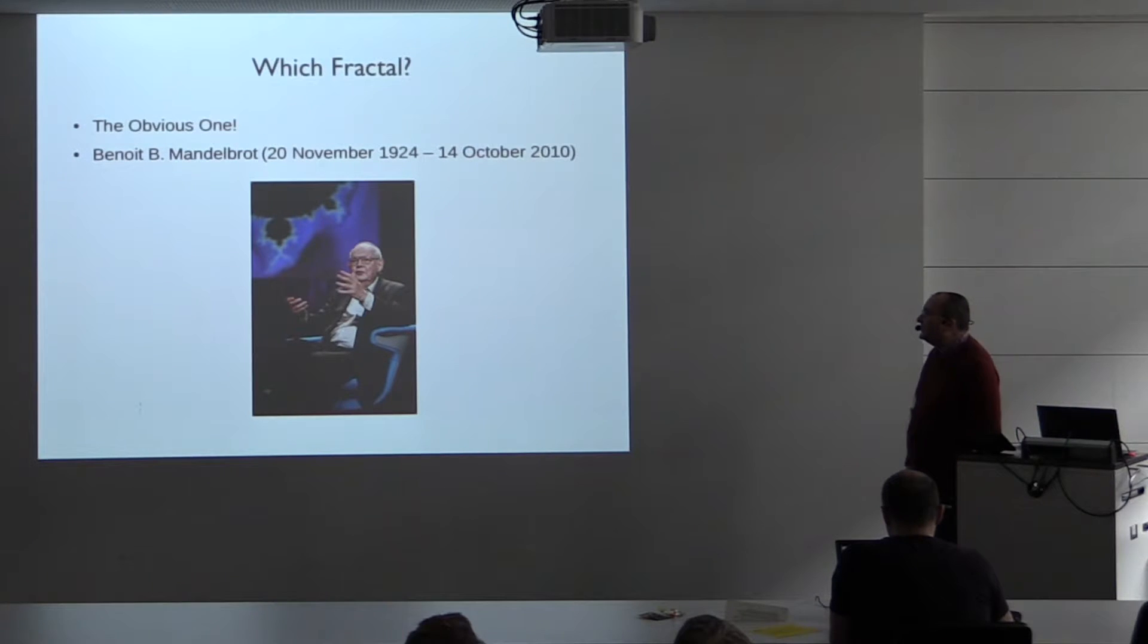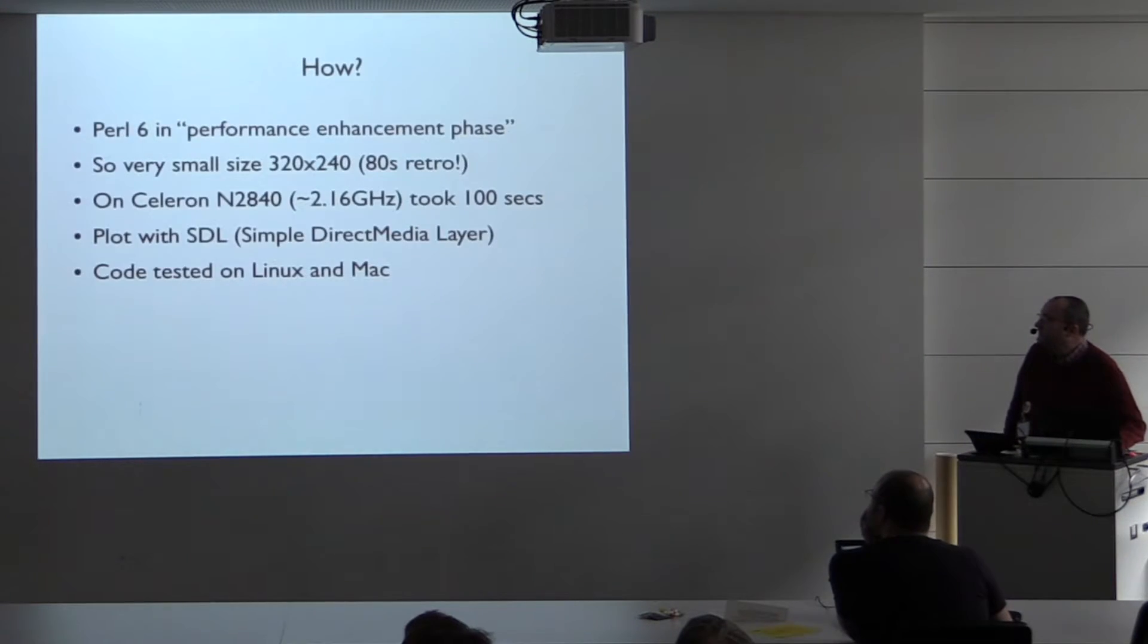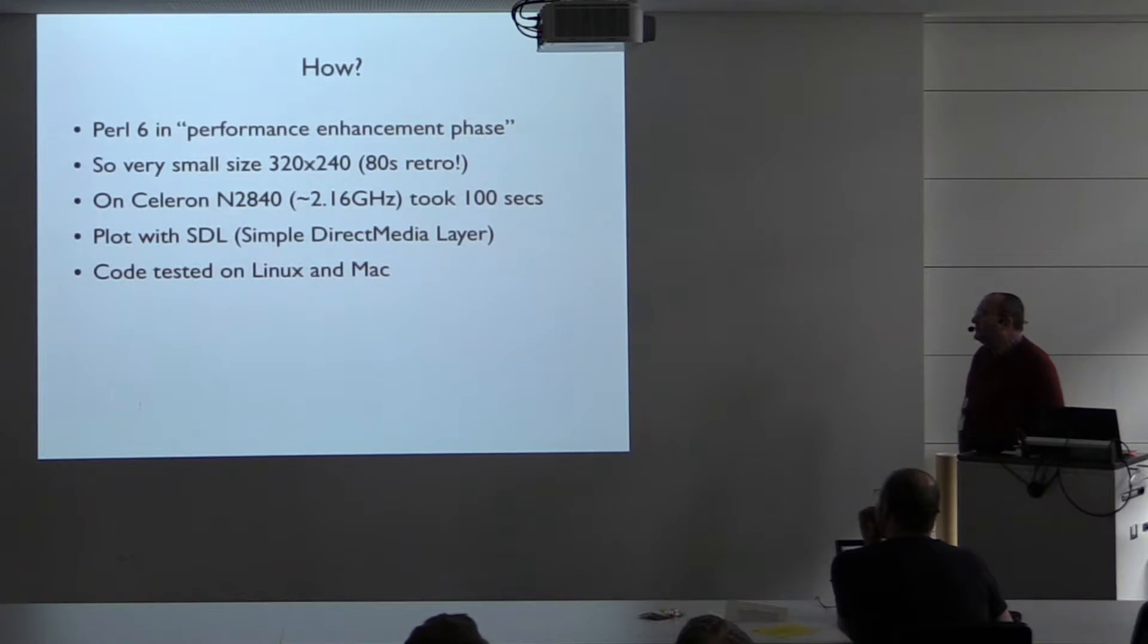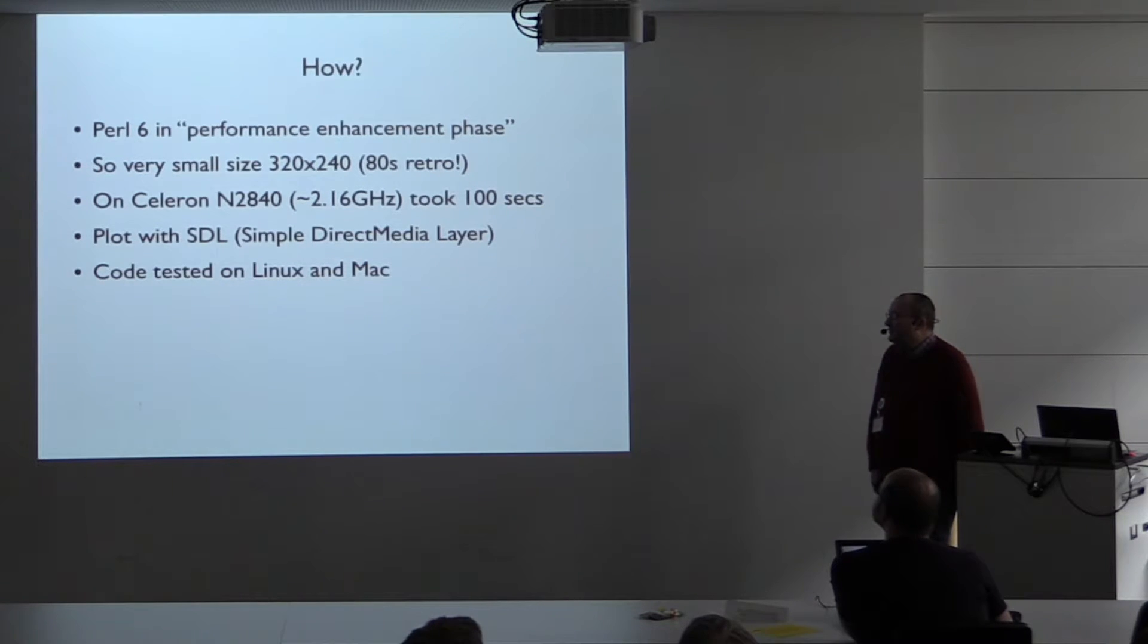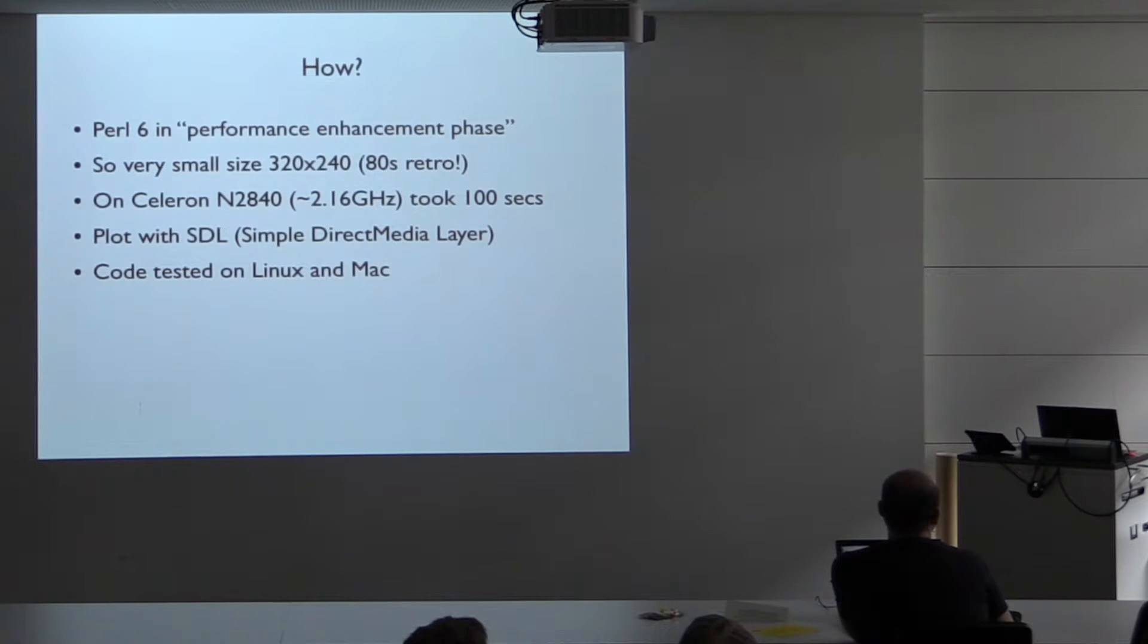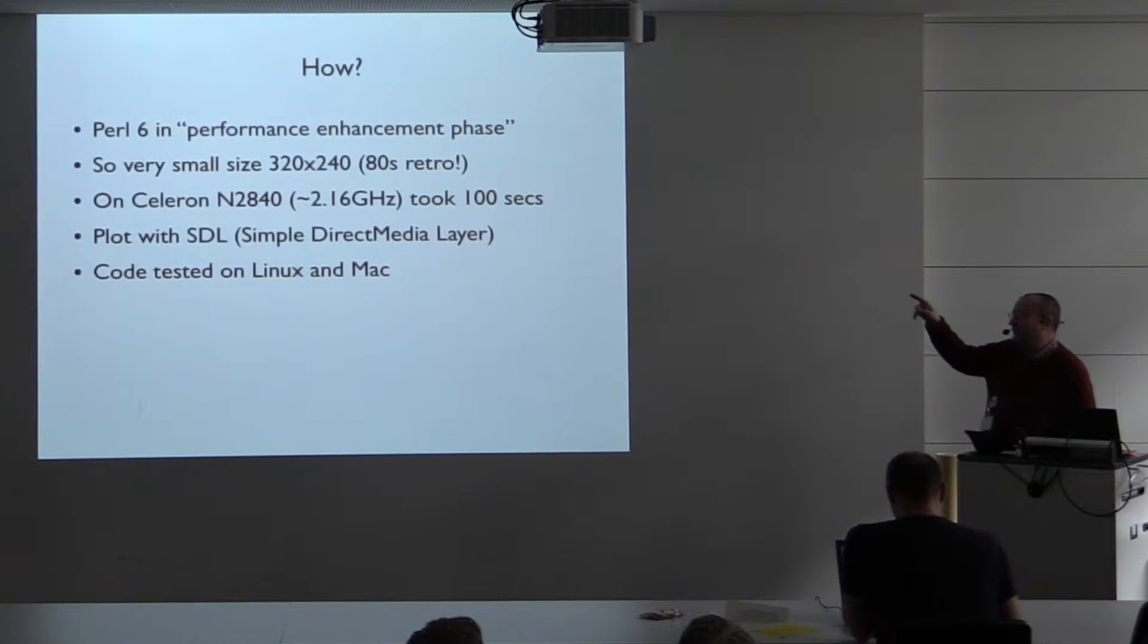I've done the obvious fractal, the Mandelbrot set. Perl 6 is in what I've euphemistically termed performance enhancement phase, which means that generally, for most tasks, it's slower than Perl 5. There are some things that it's faster, though. Experimentally, I've discovered that mathematics particularly seems faster. If you're calculating things that use very large integers or complex numbers, then it is faster than Perl 5. The computer that I did most of my benchmarking on is a 200 euro one, which is the one that failed earlier. It's not the fastest computer in the world. It's only got a couple of cores.